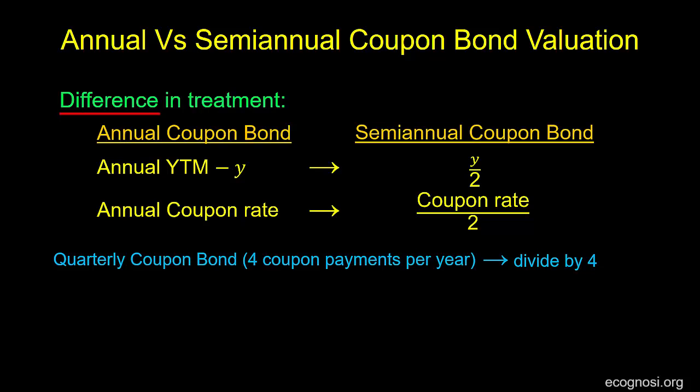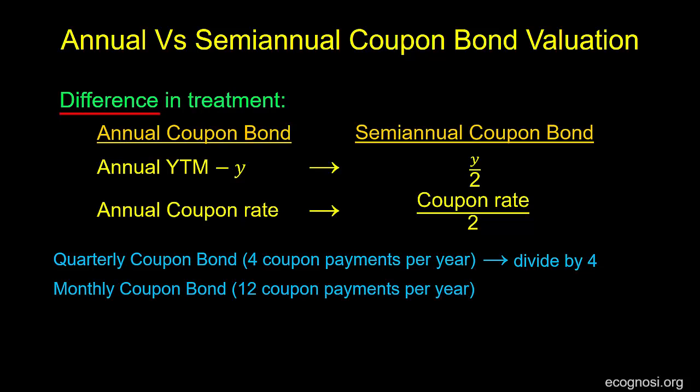Equivalently, if we had a monthly coupon bond, we'd have to divide by 12, and so on and so forth depending on the frequency of payments. So, long story short, do not forget to adjust the annual rates by the periodicity or frequency of coupon payments.